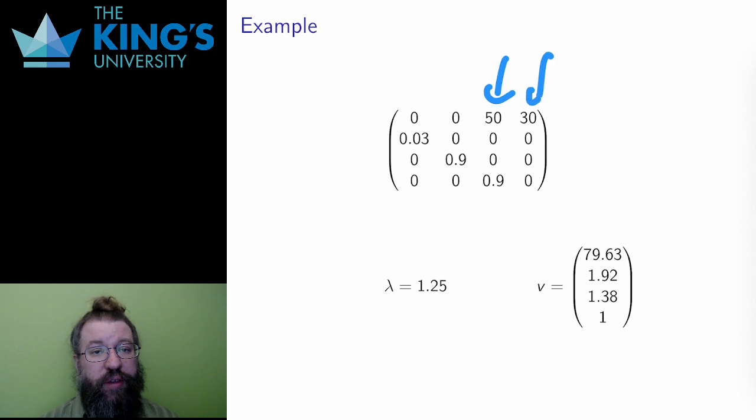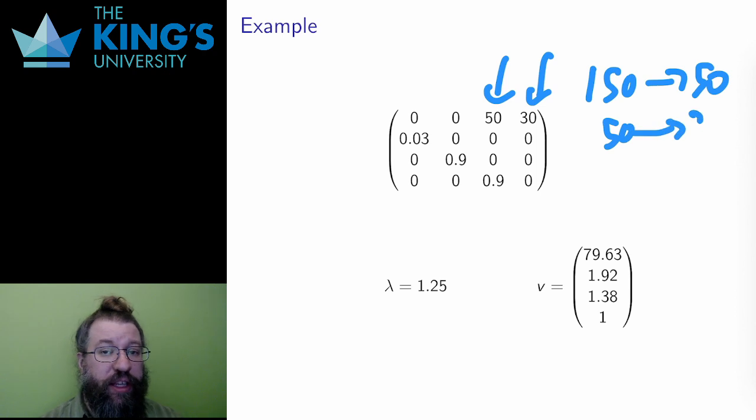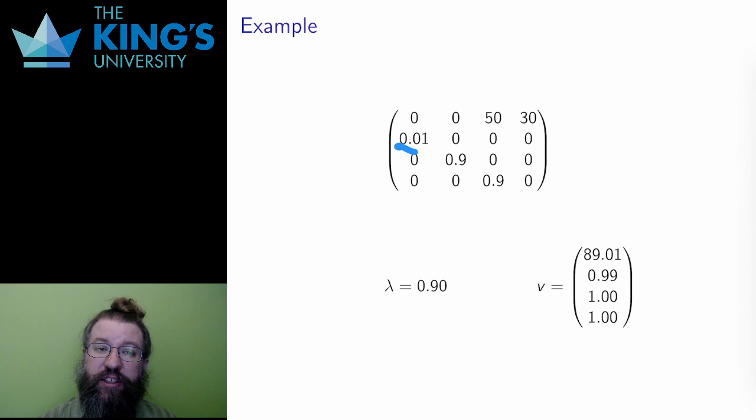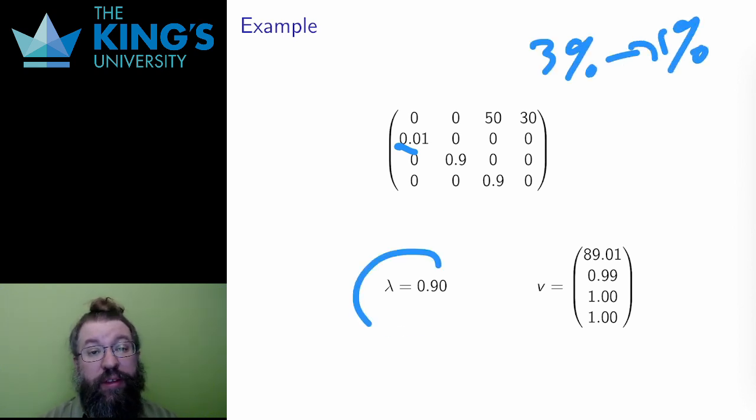This is the same as the previous slide, but I've dropped the fecundity a great deal, 150 to 50 and 50 to 30. Interestingly, this isn't enough to actually cause the population to decay. This is still enough for the population to grow. And finally, here is the same model again, but now I've dropped the first age category survival to 1% instead of 3%. And now this is enough to make the population go into decay.